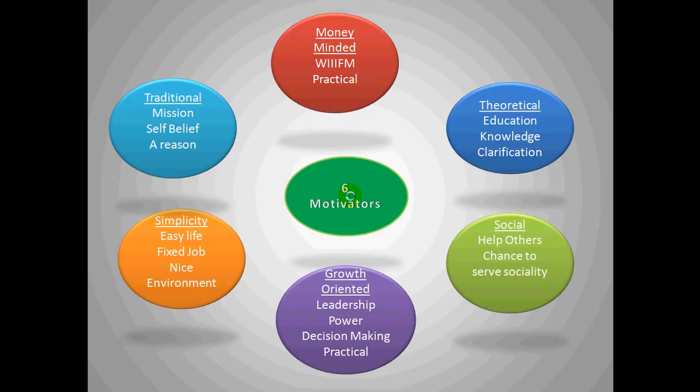The last motivator is traditional. These are people of the old kind who have a mission in life, a self-belief, and a reason to exist. All you need to do is tell them that the work you've assigned them is the mission they were looking for, that their self-belief aligns with this work, and that their reason to be here is this job. These people will exceed all levels of performance for you. So these are the six motivators that can be used to motivate different kinds of people.